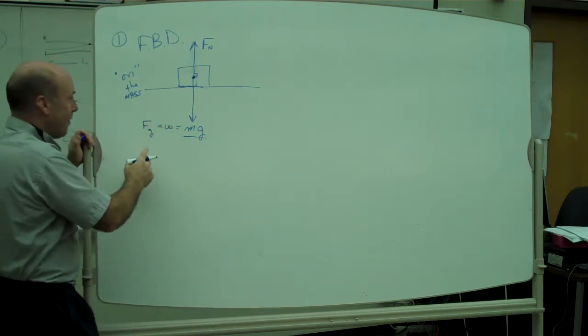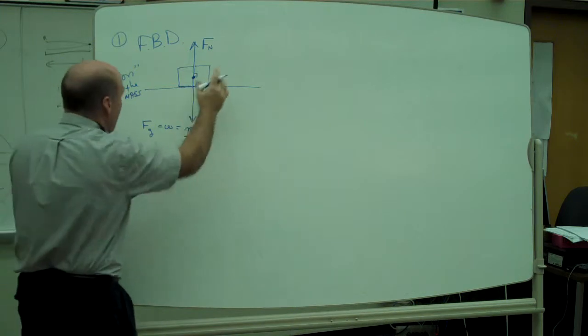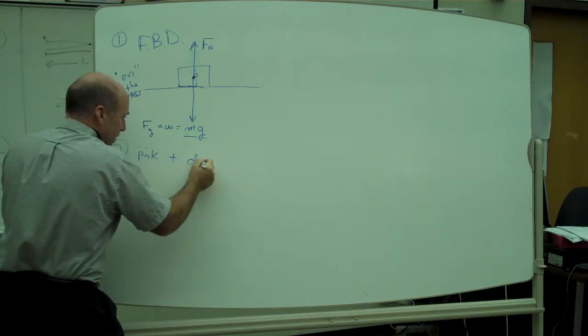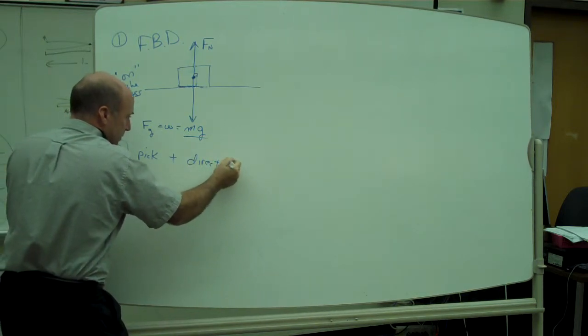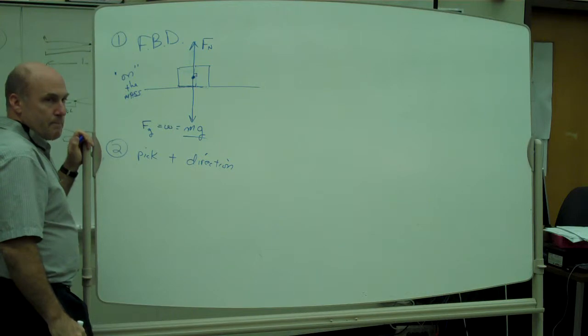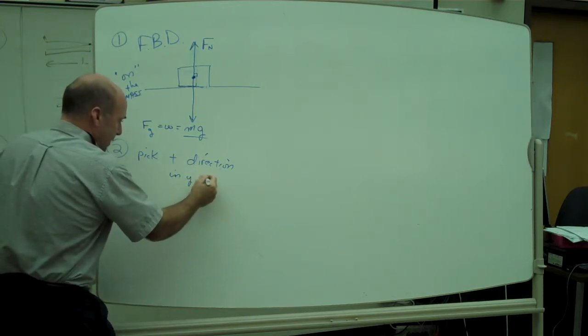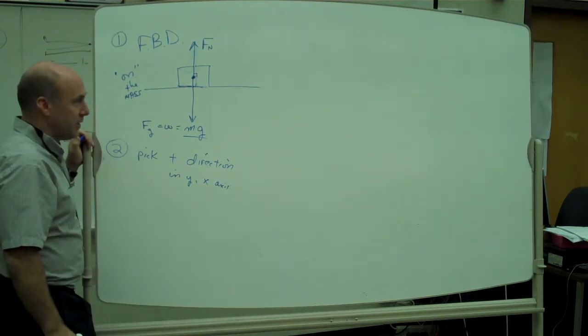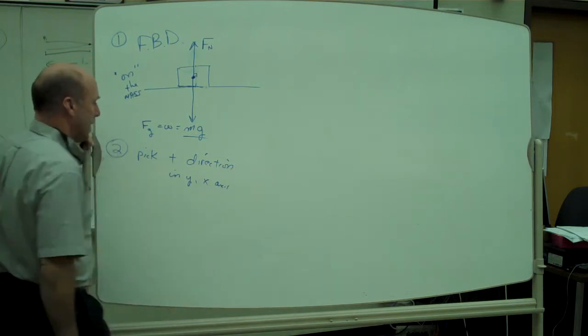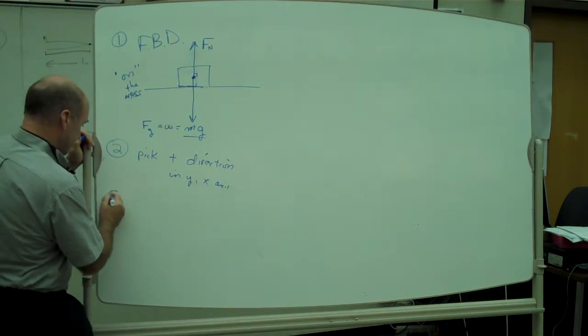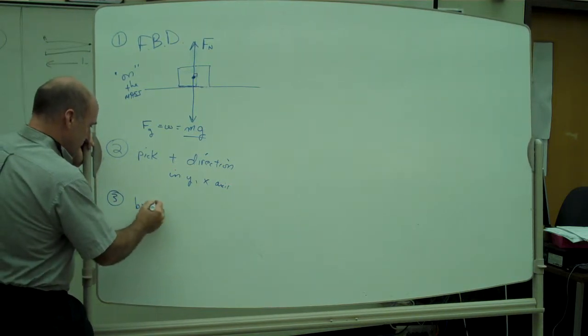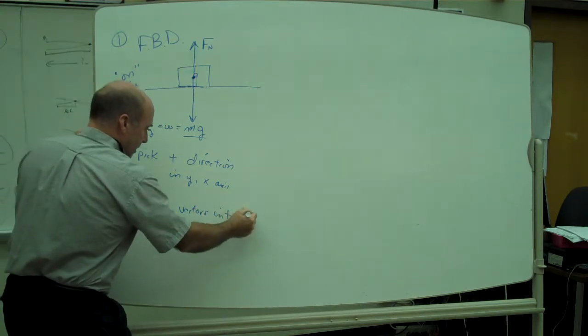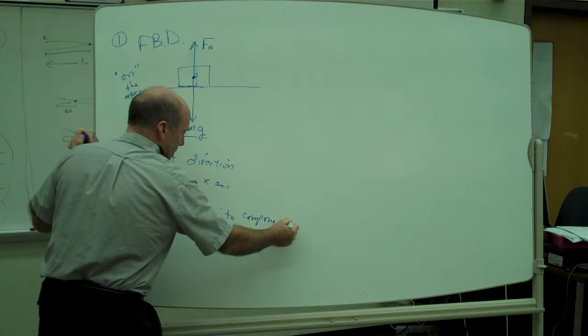Step two. Every time you have a free body diagram, after you've done labeling them, label them, draw them, step number two is pick a positive direction in the y-axis and in the x-axis. Pick a positive direction vertically and pick a positive direction horizontally. Step three,